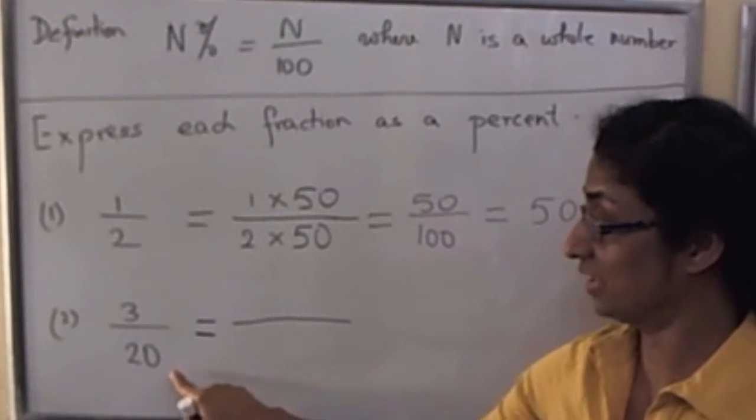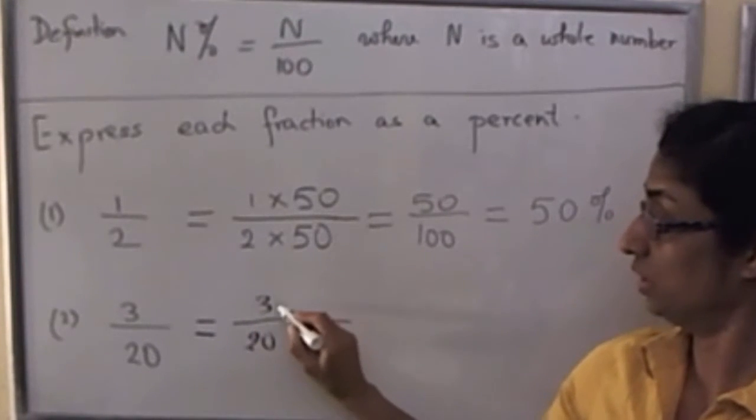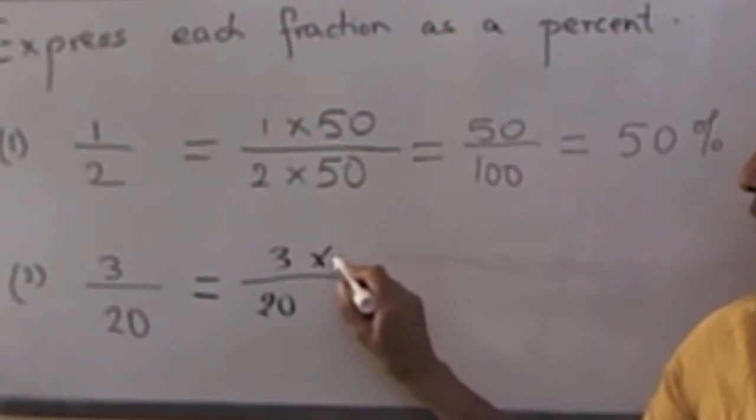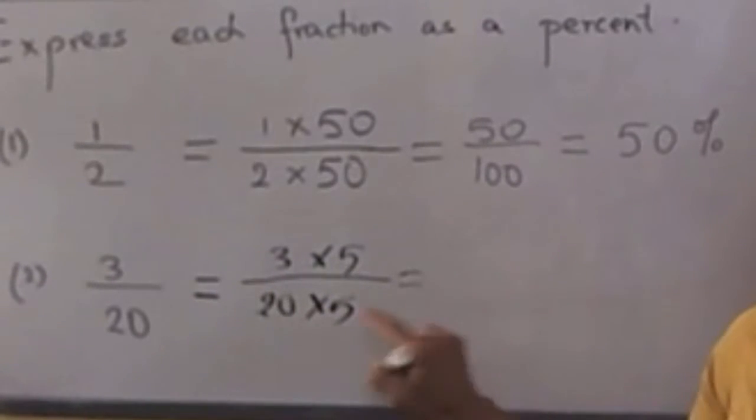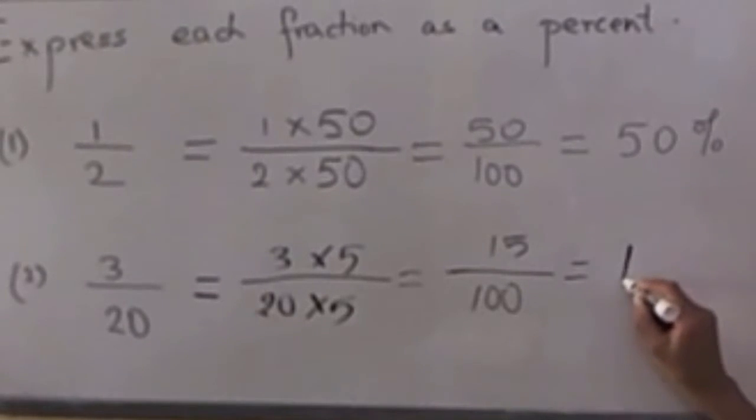...and we say 3 over 20 is in fact the same as the fraction when the numerator and denominator are both multiplied by 5. We chose 5 so that in the denominator we can have 100. And so what we have here is 15 over 100, which we can now write as 15%.